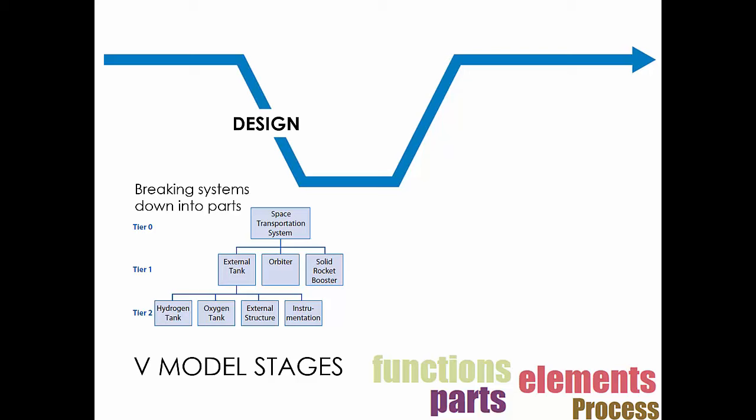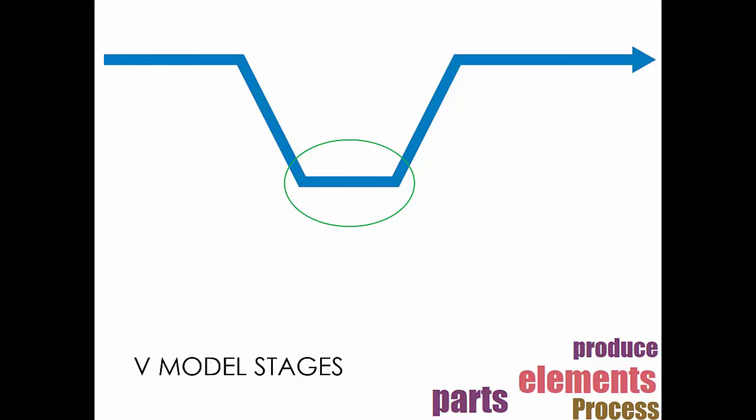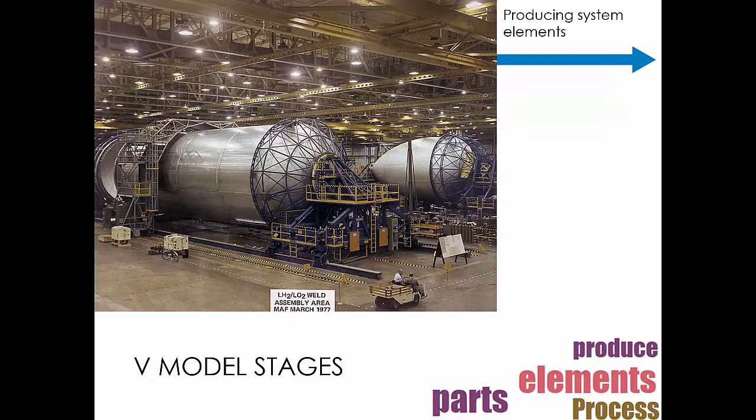And now you can see we're moving down the left-hand side of the V. So now we're getting towards the middle. This is where you start to make things. So for a space shuttle, you might start to make hydrogen fuel cells or structures like this. You can see the huge things that have to be bespokely made. They have to be made specially because you can't buy these off the shelf. They're special. And you can get the impression of scale from the people here.